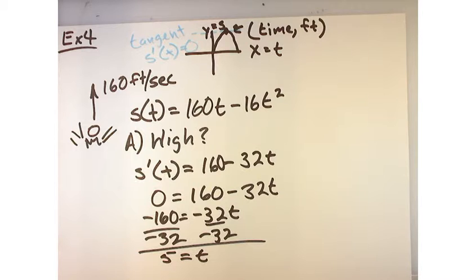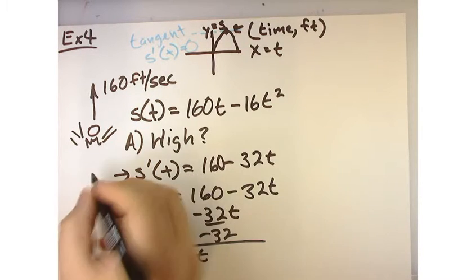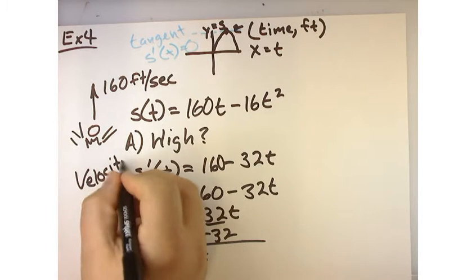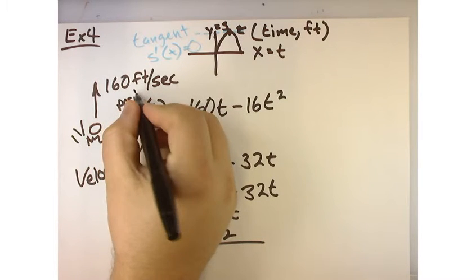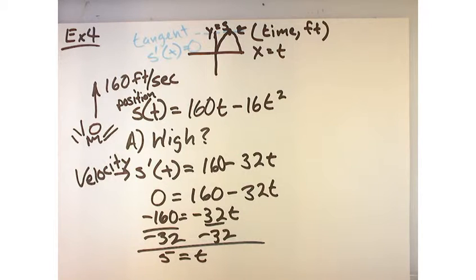One thing I want to point out, what is the derivative of a position function? What does this represent? The velocity, right? If this is my position, and I take the derivative of the position equation, then I get the velocity equation.